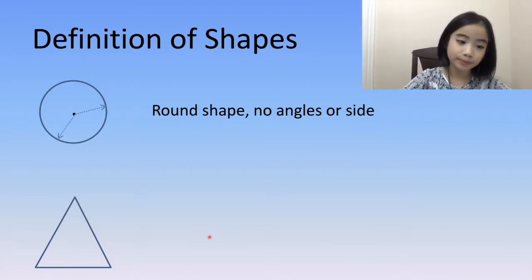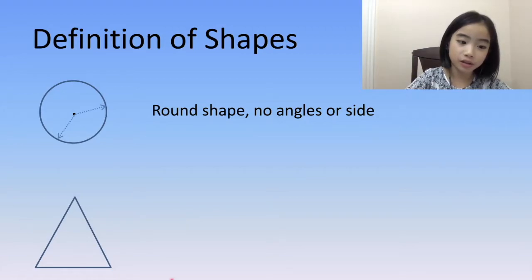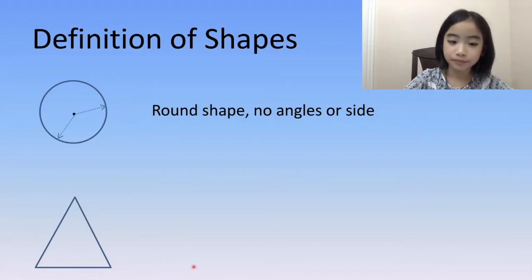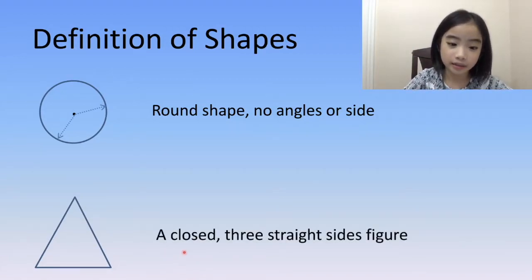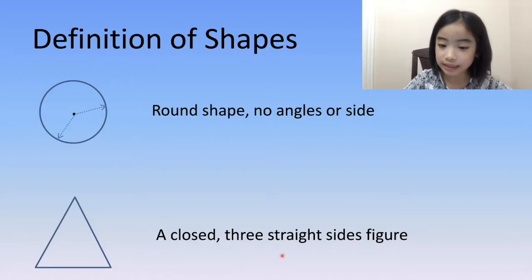Now, let's look at the triangle. A triangle is a closed, three-straight-sided figure.